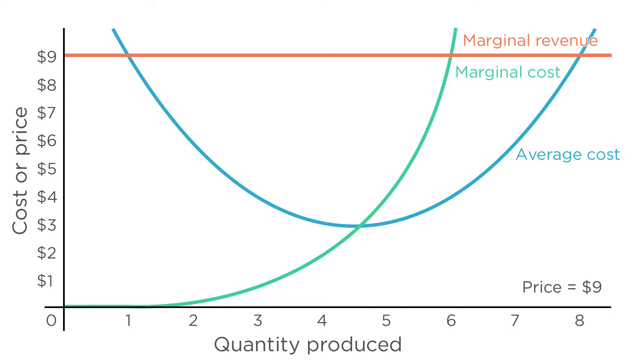So what should a firm produce? Now it's easy. It should produce wherever marginal revenue equals marginal cost. This happens whenever the marginal revenue line crosses the marginal cost line. That's right here at six units.